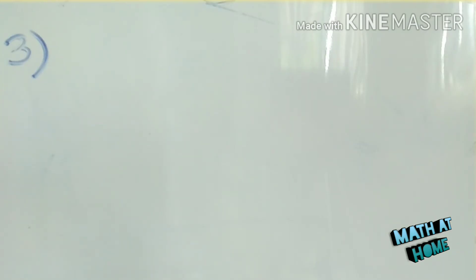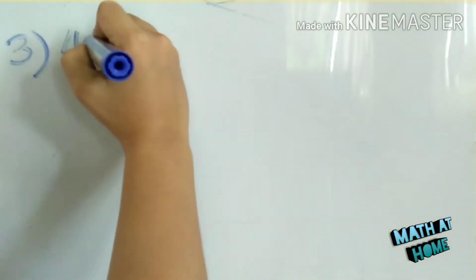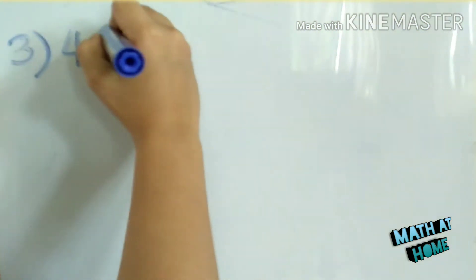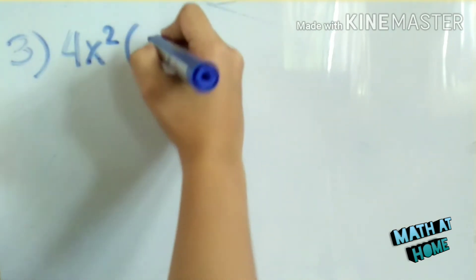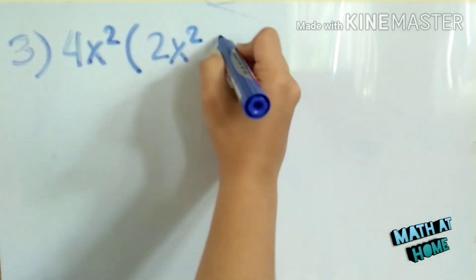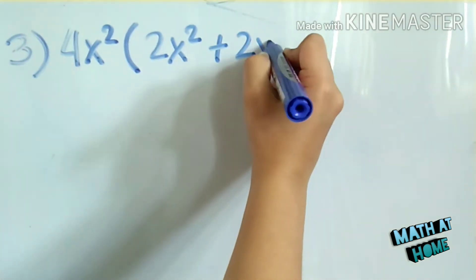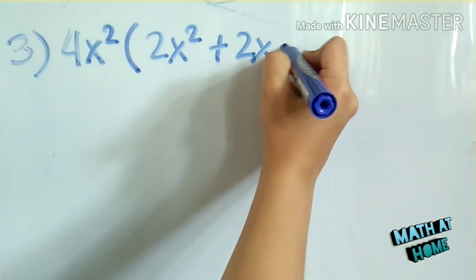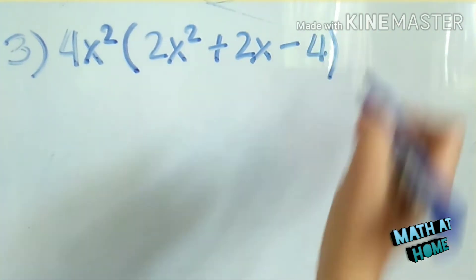Number 3. A monomial is multiplied to a trinomial. So that is 4x squared times 2x squared plus 2x minus 4.